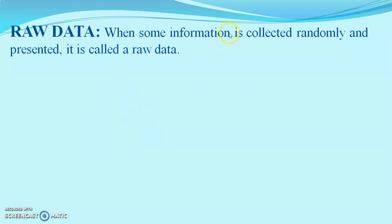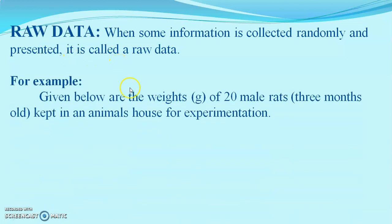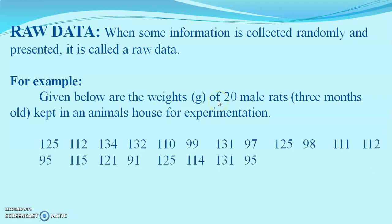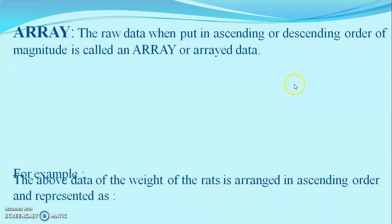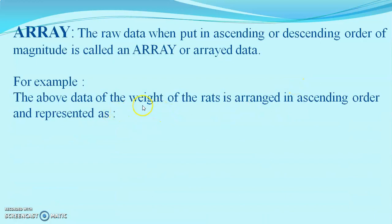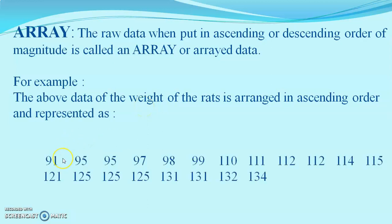Raw data is when some information is collected randomly and presented without a proper arrangement. For example, the body weight of 20 male rats just presented as collected is raw data. However, if the same set of weights of the 20 male rats is arranged in ascending or descending order, it is called an array.